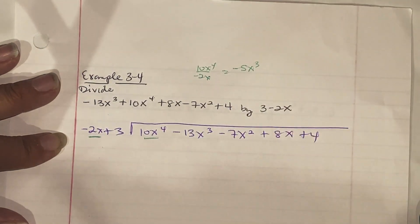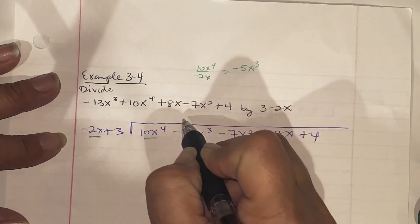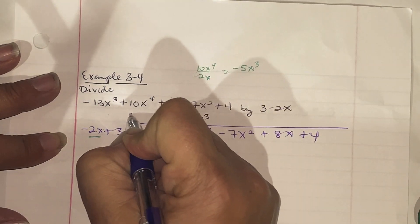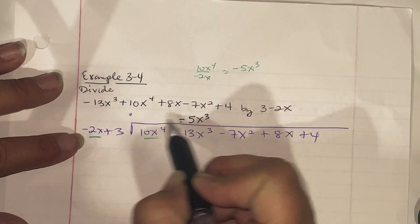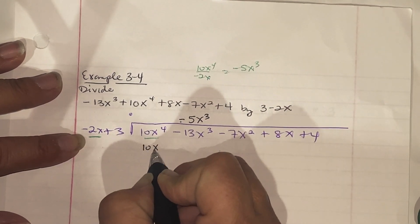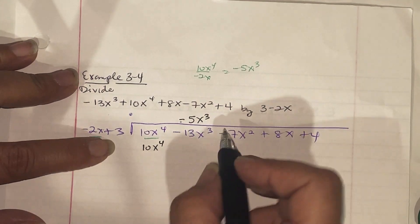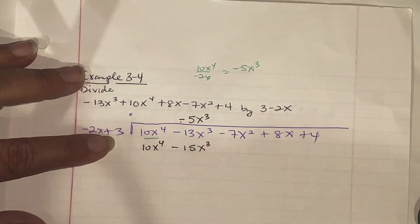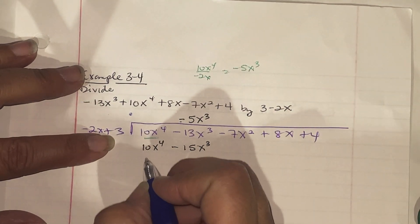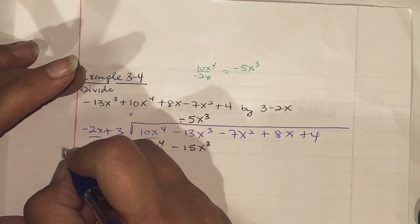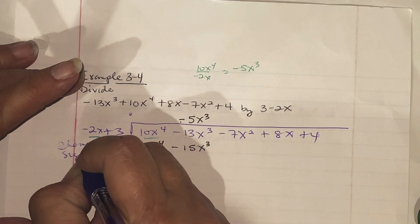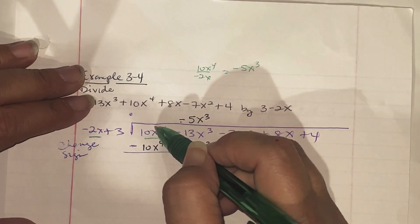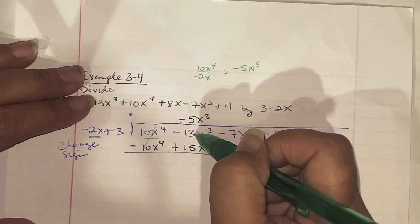Going back to multiplication like in long division, we multiply down: negative 5 times negative 2 gives positive 10x to the fourth, and negative 5x cubed times 3 is negative 15x cubed. We then subtract, changing the signs to minus and plus. 10x and negative 10x cancel out. Negative 13 plus 15 gives us positive 2x cubed.